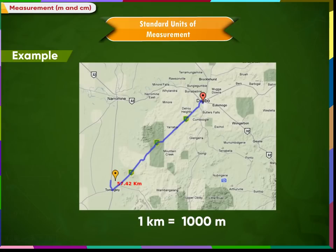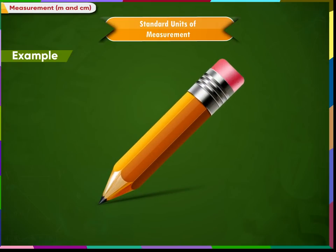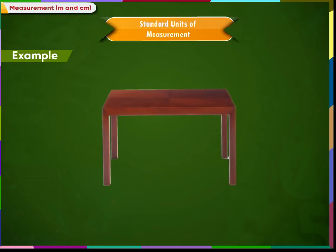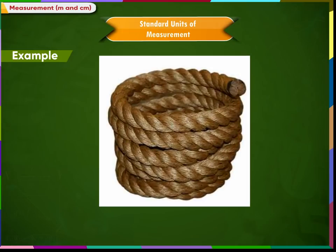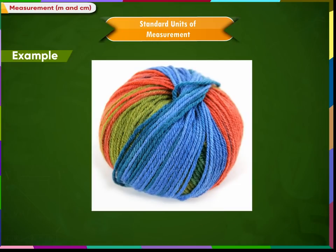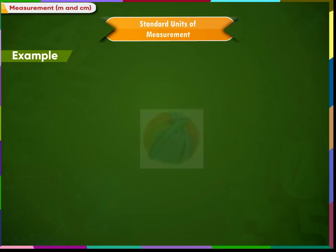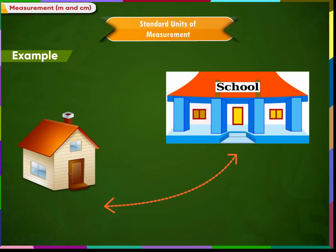Let us measure the length of these objects. The length of this pencil is 15 centimeters. The length of this table is 70 centimeters. The length of this rope is 5 meters. The length of this yarn is 15 meters. The distance between these two places is 3 kilometers.